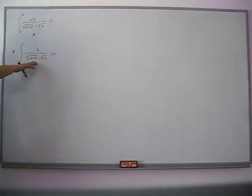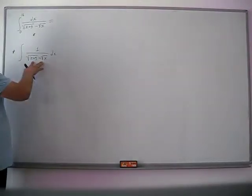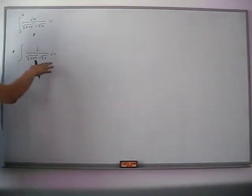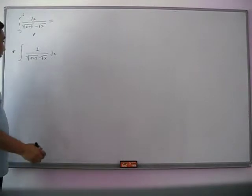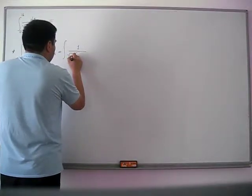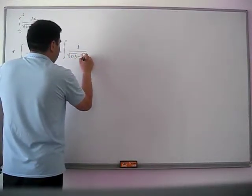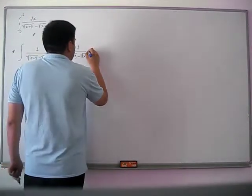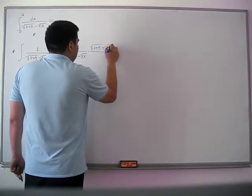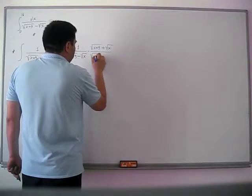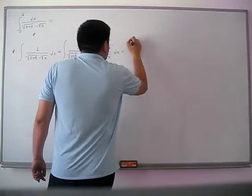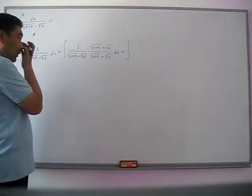Since the denominator has two terms and both of them have a square root, we can use the conjugate of the denominator to multiply both numerator and denominator, so our denominator will be simplified. We will have the integral of 1 over (√(x+9) − √x) times (√(x+9) + √x) over (√(x+9) + √x), dx.